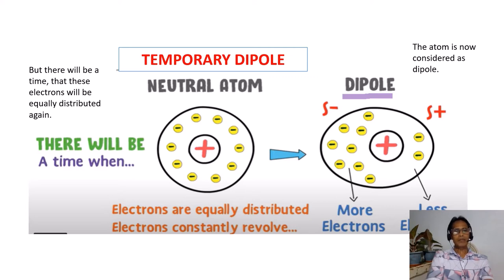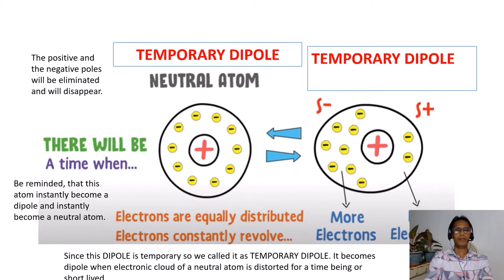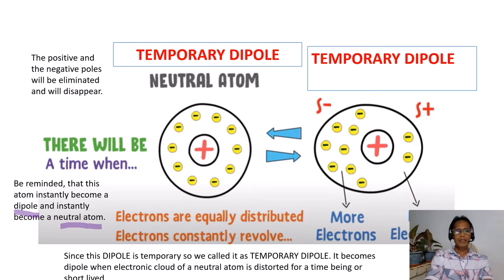But there will be a time when these electrons will be equally distributed again. The positive and negative poles will be eliminated and will disappear. This atom instantly becomes a dipole and instantly becomes a neutral atom again. Since this dipole is temporary, we call it a temporary dipole — it becomes a dipole when the electron cloud of a neutral atom is distorted for a short time.